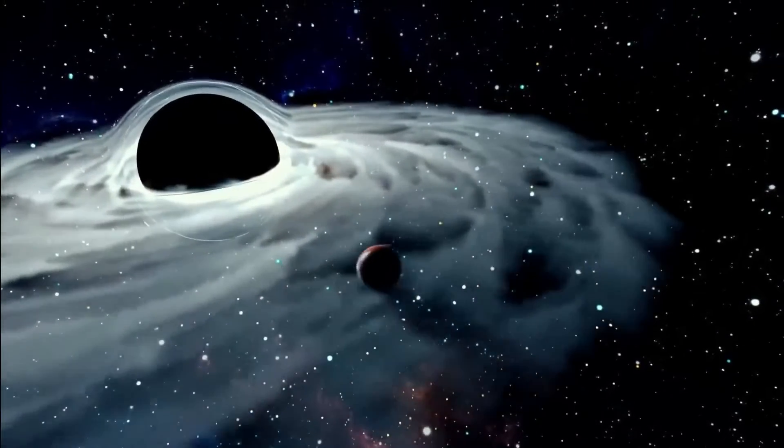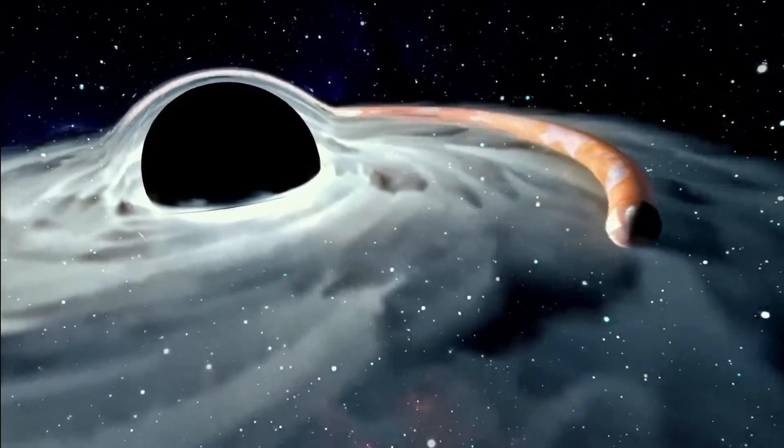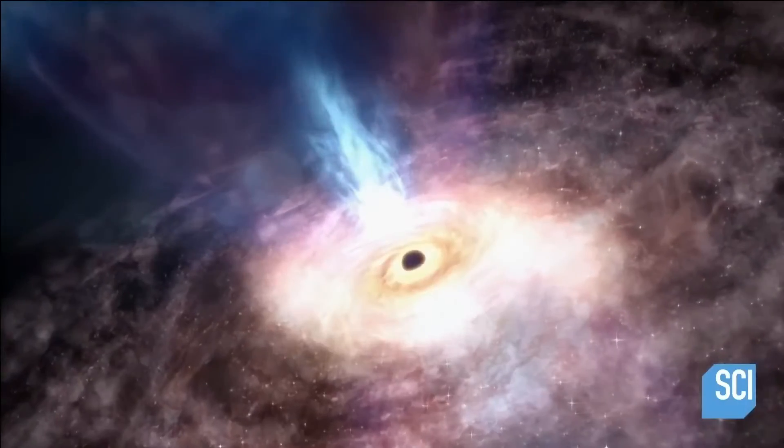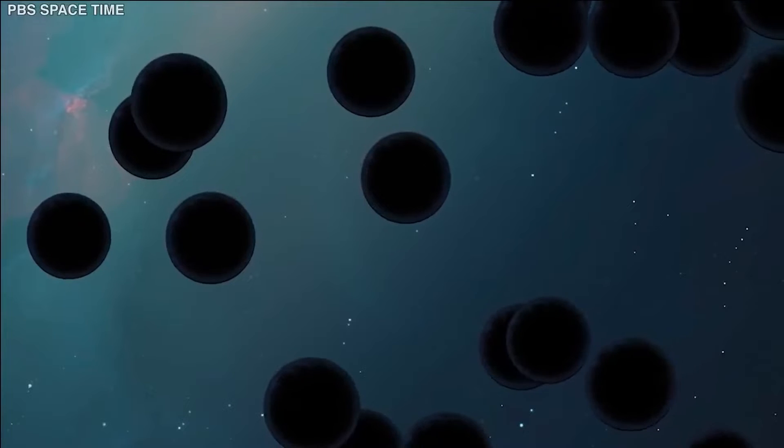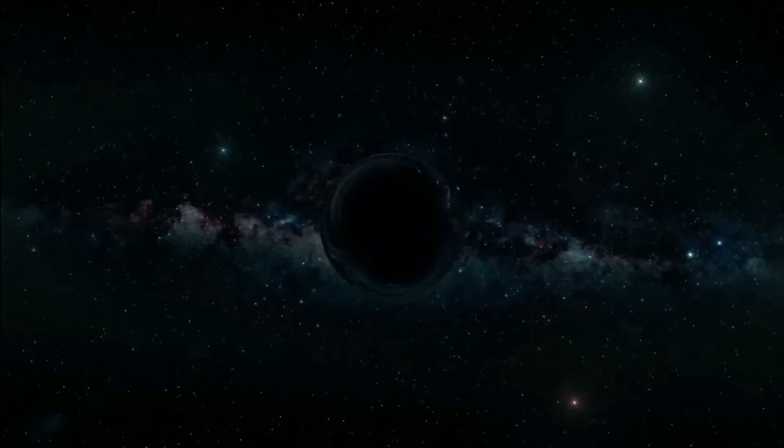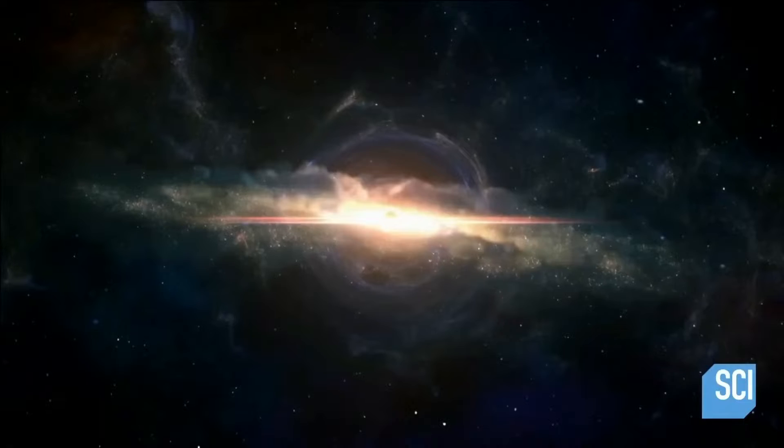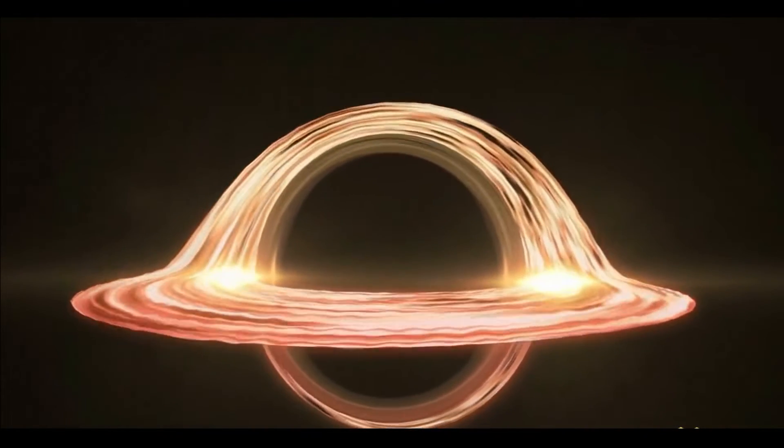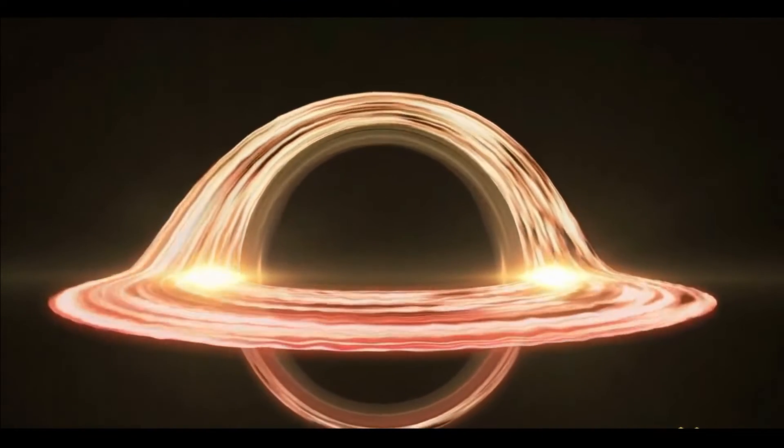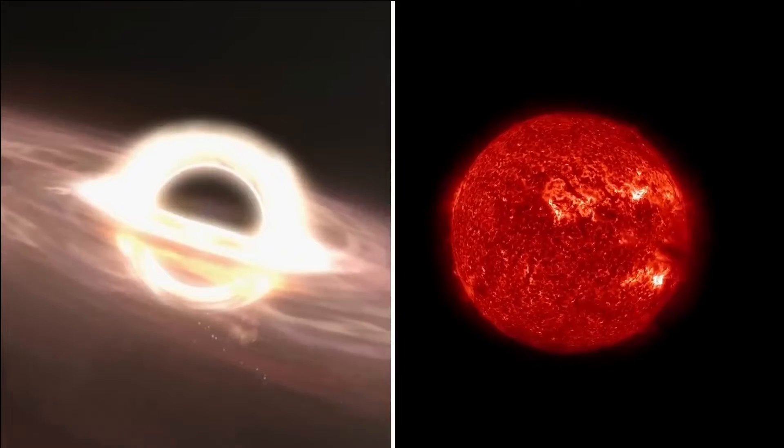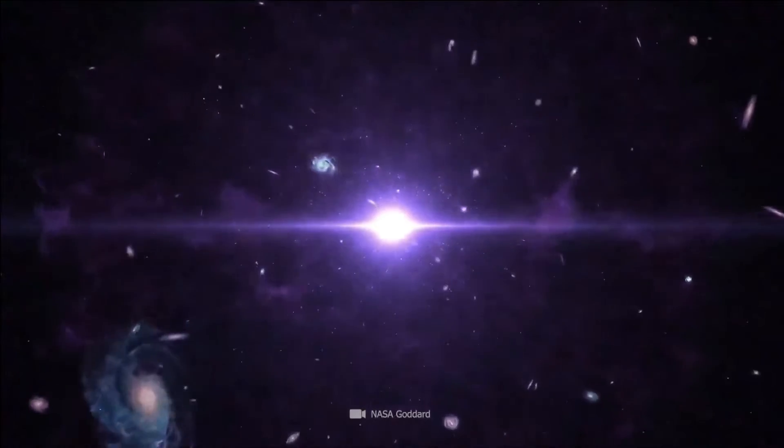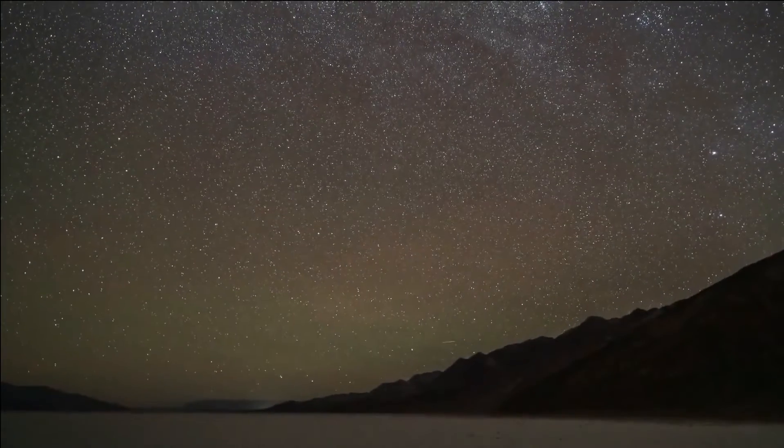Black holes come in a range of sizes, but there are three major types. The black hole's mass and size determine what kind it is. The smallest are called primordial black holes. Scientists believe this type of black hole is as small as a single atom but with the mass of a large mountain.